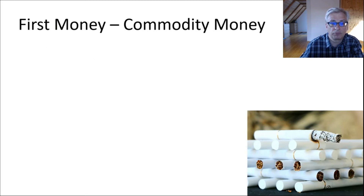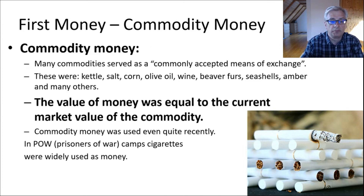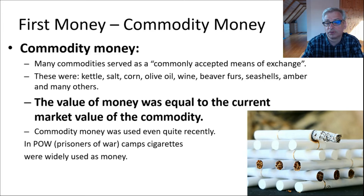The first type of money was commodity money. In many societies, some kind of commonly accepted means of exchange emerged, depending on the society, culture, and continent. Different types of commodity money served as accepted means of exchange — cattle, salt, corn, olive oil, wine, beaver fur, amber in some regions, and many other things.